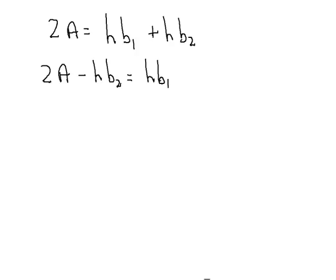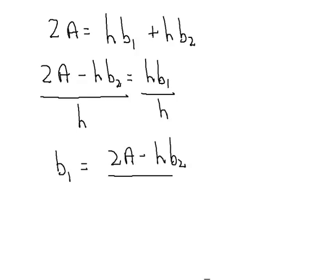We next observe that the coefficient of b sub 1 is h. And so to finish up, what we need to do is divide both sides by h. So our final result is b sub 1 equals 2A minus hb sub 2, all divided by h.